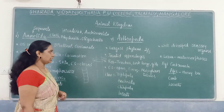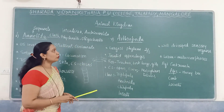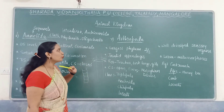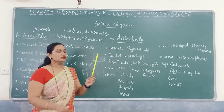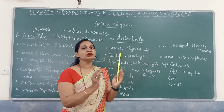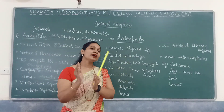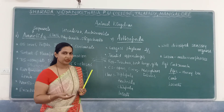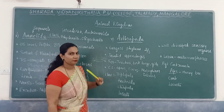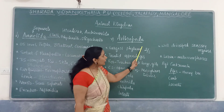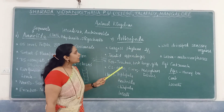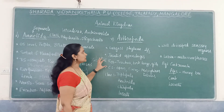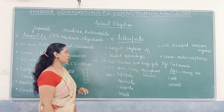Next we move on to one of the largest phyla in the animal kingdom — phylum Arthropoda. 'Arthro' refers to jointed and 'poda' refers to appendages; they mainly have jointed appendages. This is the largest phylum — two-thirds of all animals are included in Arthropoda, and the maximum number of insects belong here.